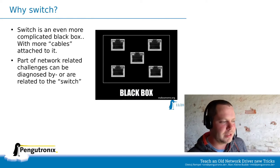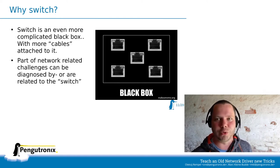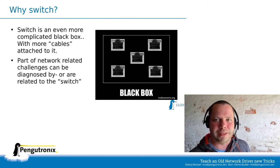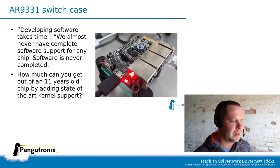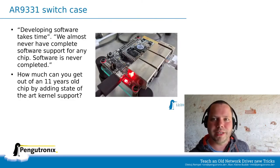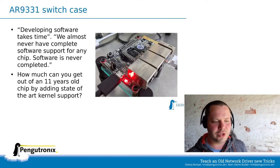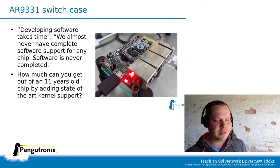Another example is the switch. Why switch? Well, it is complicated enough and it is kind of a black box with even more ports. It can be used as part of diagnostics for complicated network problems, or it is part of the problem itself. As my point of interest, I took one of the old chips from Atheros — the AR9331 — which has many integrated parts: a MIPS CPU at 200 MHz or so. It has an integrated switch for five ports and even integrated Wi-Fi, but that is currently not interesting for me.